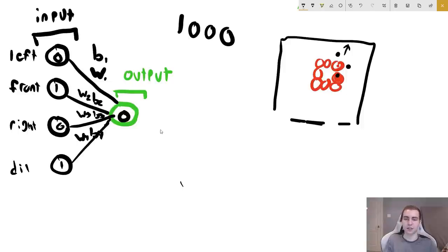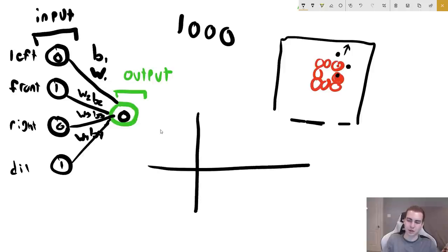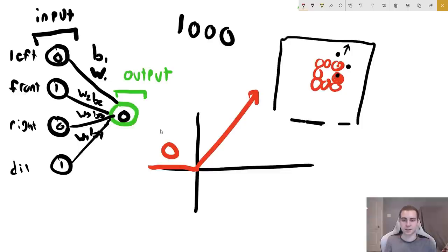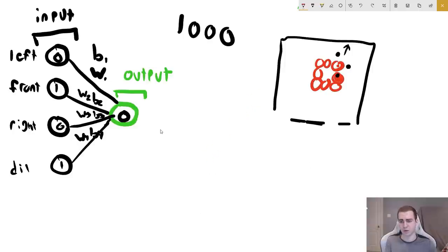Another very popular activation function — actually used more than sigmoid nowadays — is Rectified Linear Unit, or ReLU. What it does is take all negative values and automatically set them to zero, and take all positive values and keep them positive. It is a nonlinear function that enhances the complexity of our model, keeping data points in the range of zero to positive infinity.